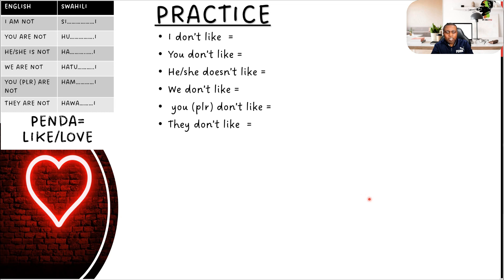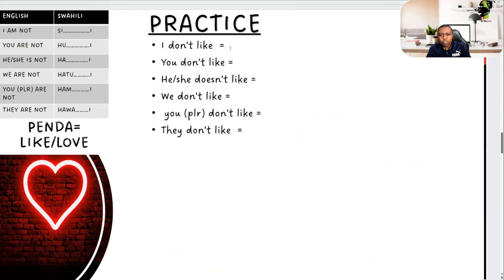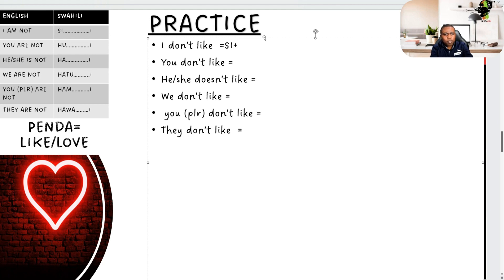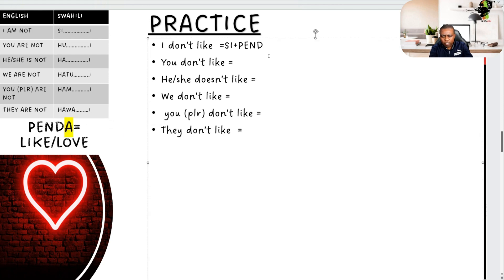Let's look at a real example we can do together. I've given a table on the left with the subject prefixes and the verb 'penda' to construct sentences with. Let's go for the first one: I don't like. I on the negative is 'si', plus the verb 'penda'. Because it's a Bantu verb ending with R, we replace R with E, giving us: sipendi. Kizuri sana — sipendi. Good.